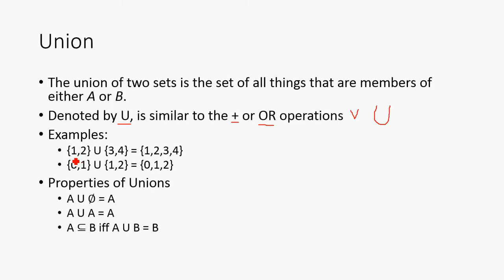So, if we wanted to union these two sets right here, the set {1,2} union set {3,4}, that's just going to be {1,2,3,4}. Or {0,1} union {1,2} is going to be {0,1,2} because of the uniqueness. So, you don't double count 1.